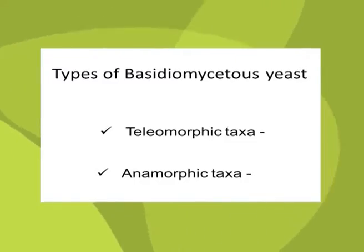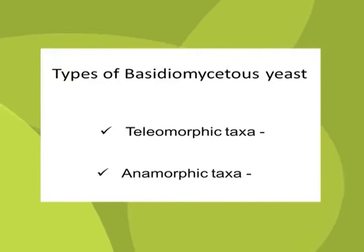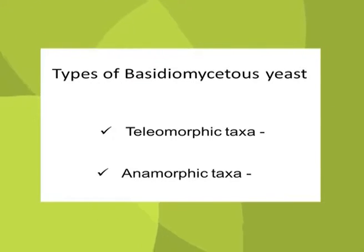Basidiomycetous yeasts are divided into two groups — teleomorphic and anamorphic taxa — on the basis of the presence or absence of a perfect state, or the sexual state. In reality, the teleomorphic forms are further categorized into groups.